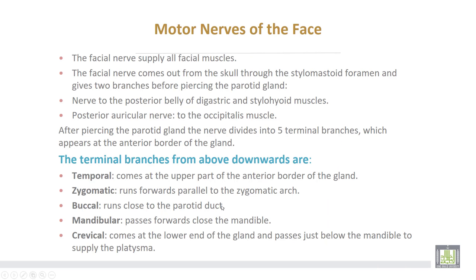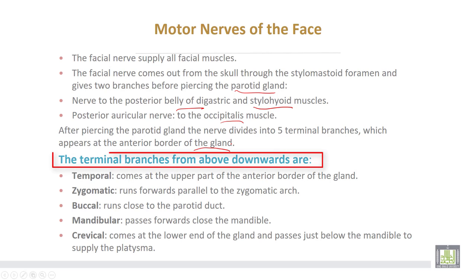The motor nerves of the face: the facial nerve supplies all facial muscles. The facial nerve comes out of the skull through the stylomastoid foramen and gives two branches before piercing the parotid gland: the nerve to posterior belly of the digastric muscle and the nerve to the stylohyoid muscle, then the posterior auricular nerve to the occipitalis muscle. After piercing the parotid gland, the nerve divides into five terminal branches which appear at the anterior border of the parotid gland. The temporal nerve comes out at the upper part of the anterior border of the gland.